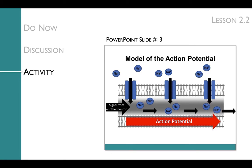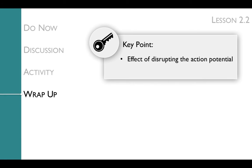Two important notes: First, for simplicity, this lesson does not discuss how the axon pumps sodium ions out after firing an action potential. If students are curious, there is a pump in the membrane that literally pumps sodium back outside — and that pump is also why there is much more sodium outside than inside when the membrane is at rest. Second, this lesson does not discuss how the action potential is converted into a chemical signal at the synapse; that process will be discussed in Unit 3.